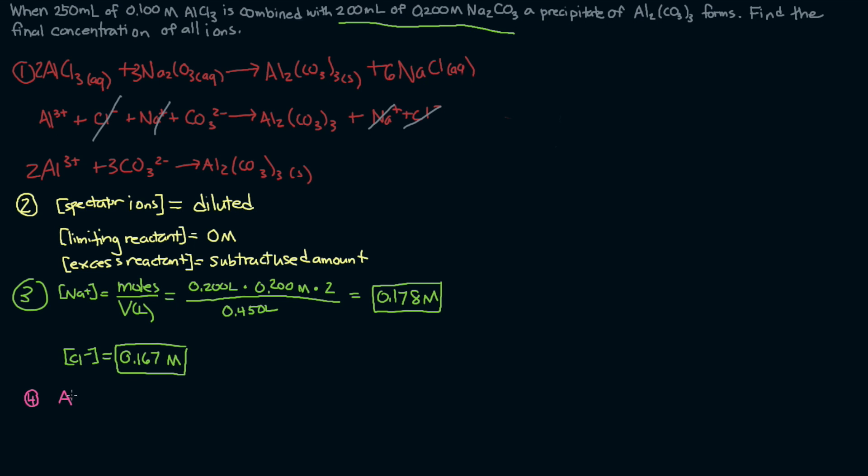So Al3+ is limiting reactant. So once we know the limiting reactant, that gives us the next answer. If aluminum is our limiting reactant, that means the concentration of aluminum at the end will be 0 molar. It all gets used up.